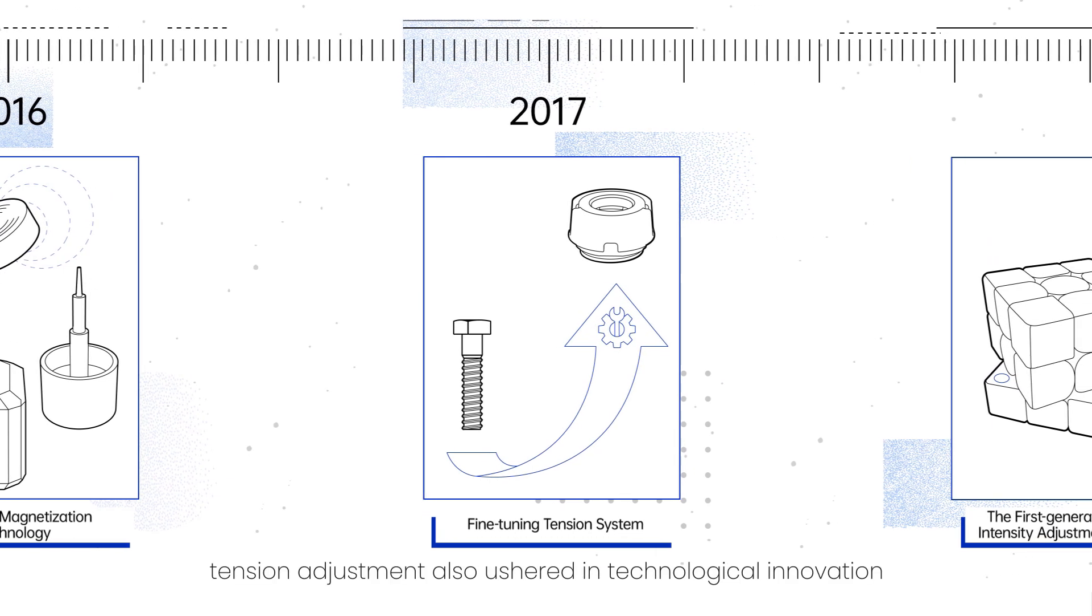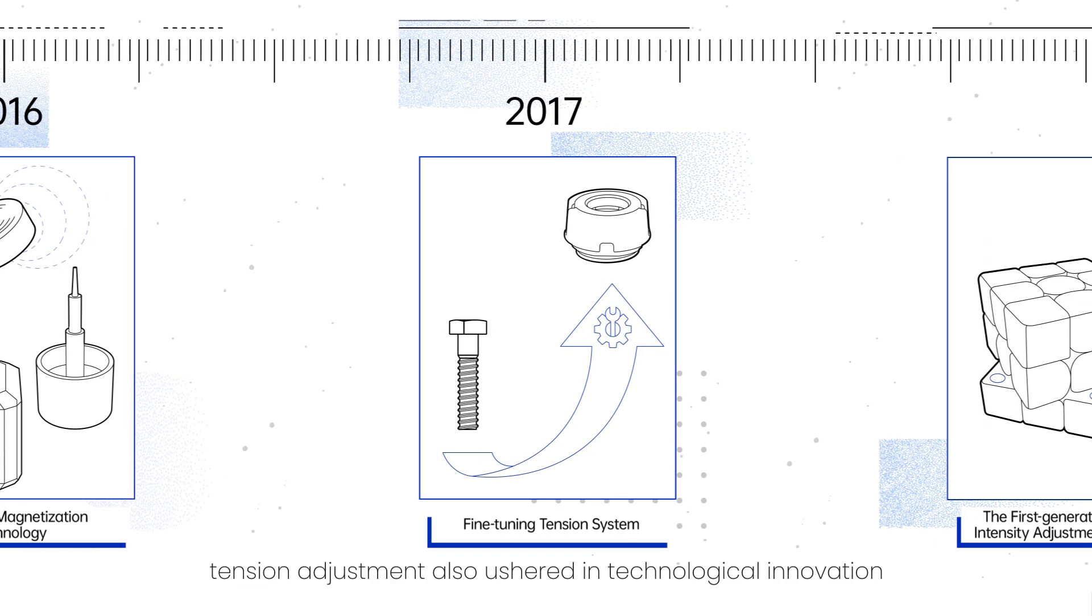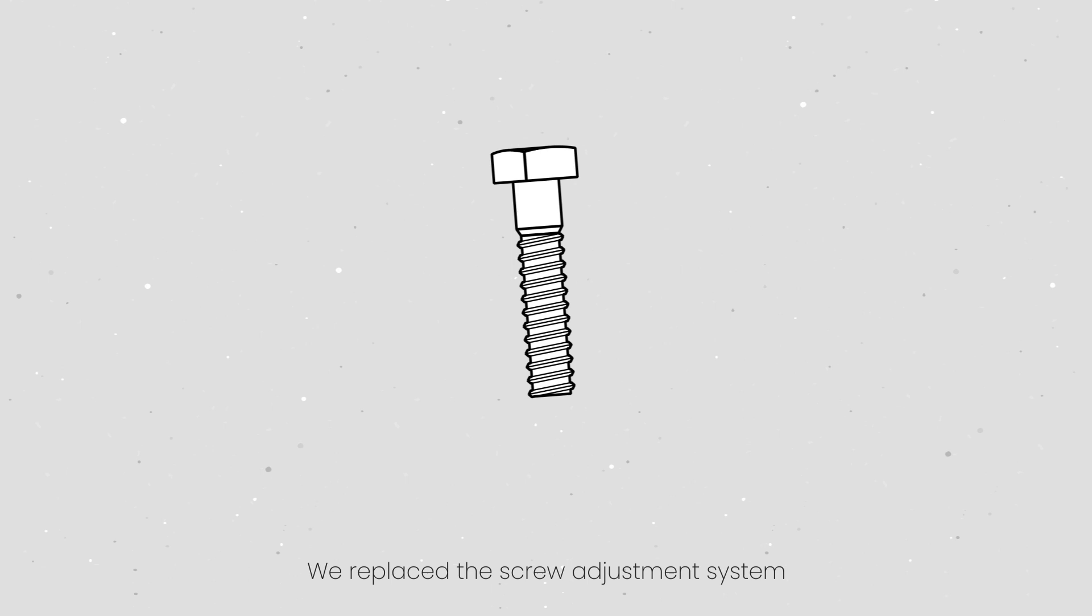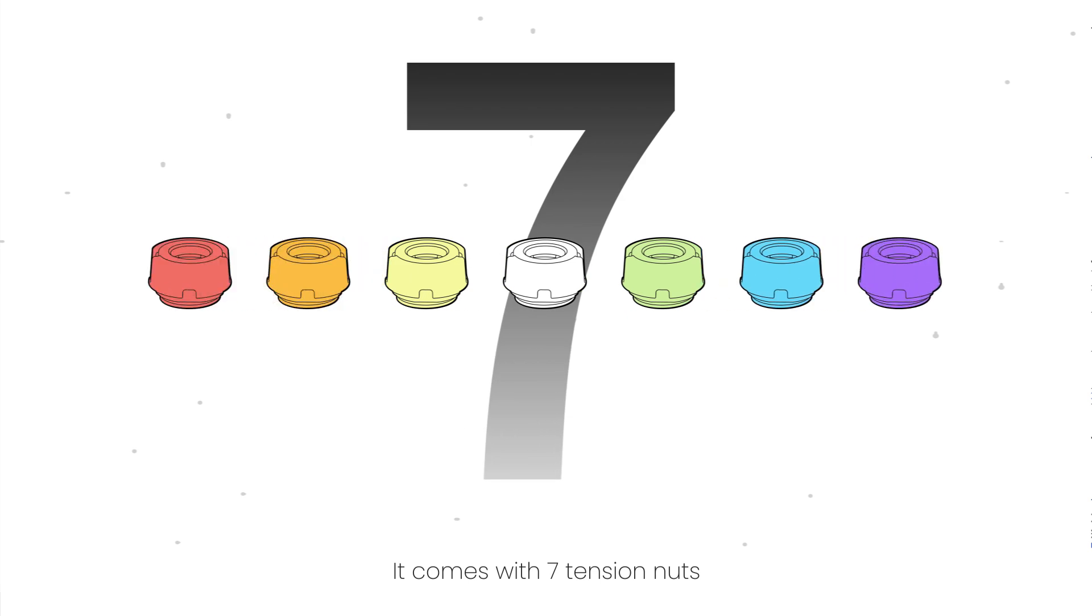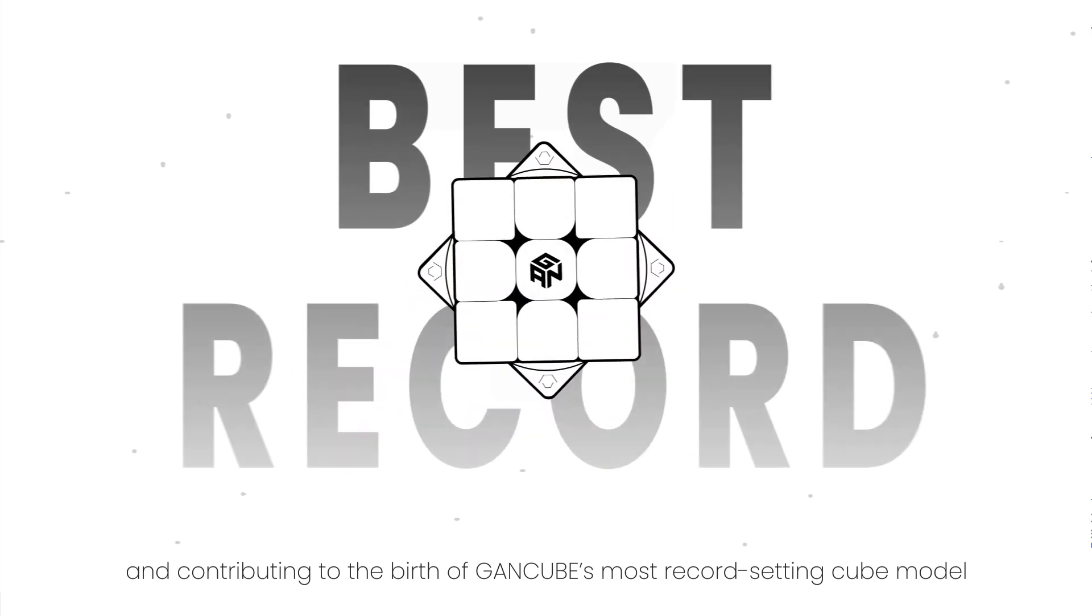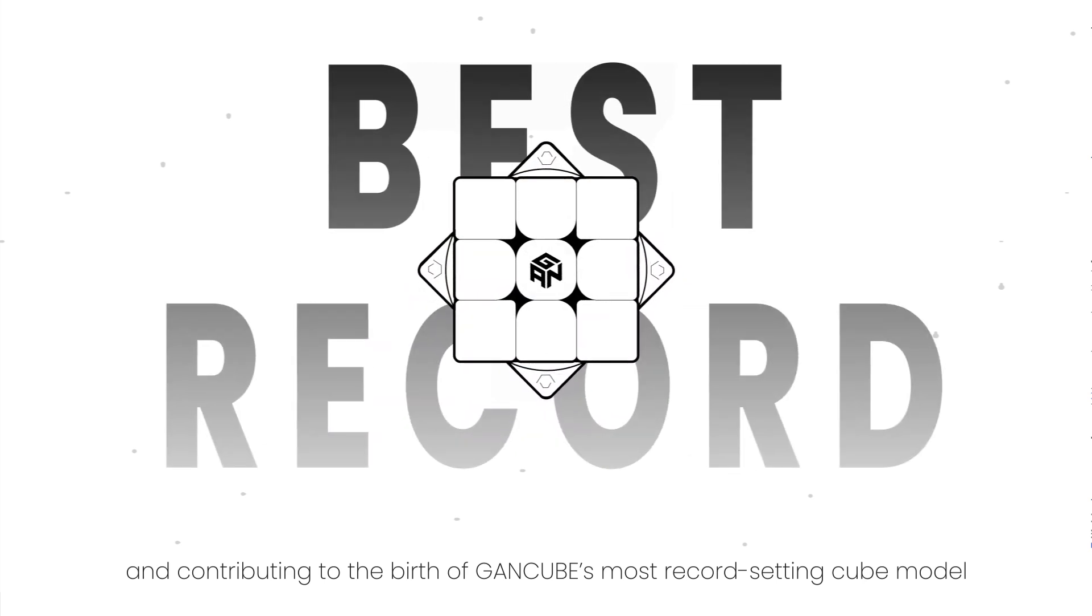In the next year, tension adjustment also ushered in technological innovation. We replaced the screw adjustment system, a long-standing practice in the industry, with a fine-tuning tension system. It comes with seven tension nuts, marking the first step towards the standardization of tension adjustment and contributing to the birth of GAN Cube's most record-setting cube model.